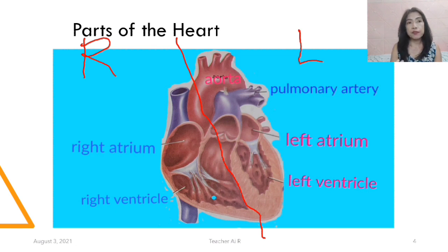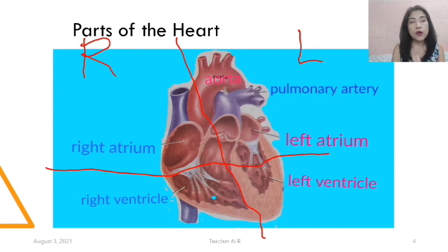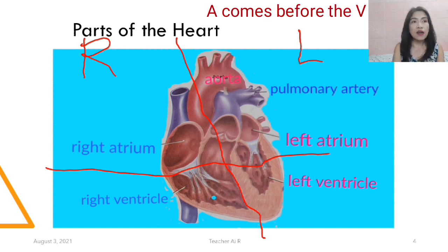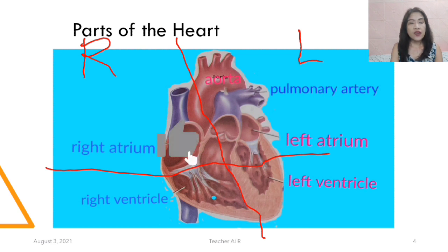The right chamber and the left chamber are each divided into two parts as well. The upper chamber is the right atrium and the lower chamber is the right ventricle. On the left, the upper part is the left atrium and the lower part is the left ventricle. To easily memorize which comes first, always remember: A comes before V. So the atrium comes before the ventricle — that's why we have the upper atrium and the lower ventricle.